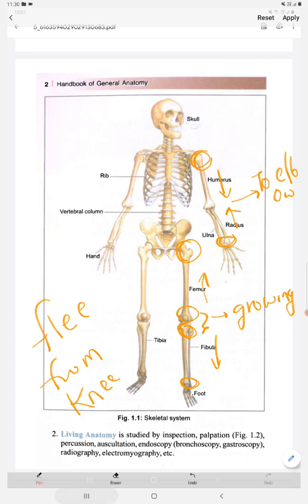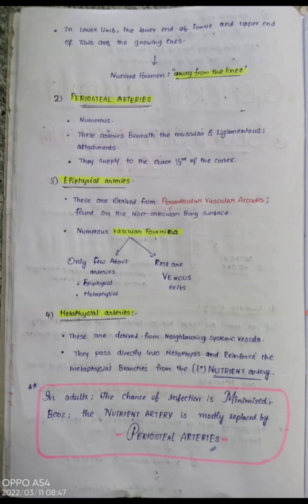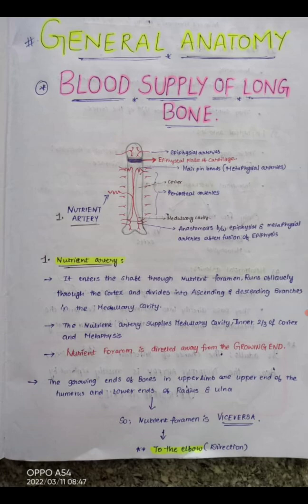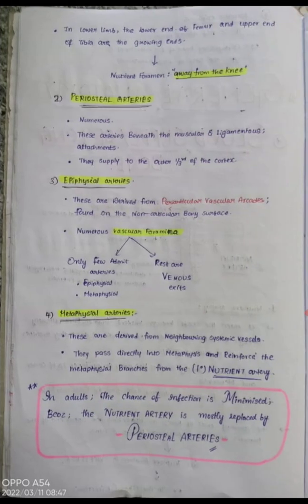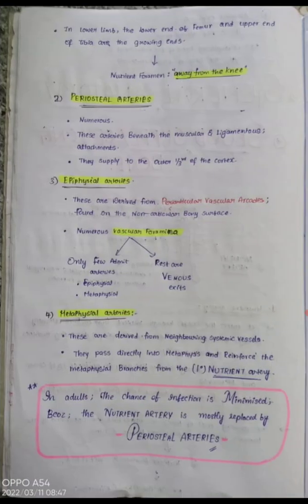This covers the nutrient foramen direction in the upper and lower limb. Coming to the second type of artery — the periosteal arteries — these are very numerous in number. As seen in the diagram, these arteries are present beneath the muscular and ligamentous attachments. They supply the outer one-third of the cortex. The inner two-thirds of the cortex and the medullary cavity are supplied by the nutrient artery.